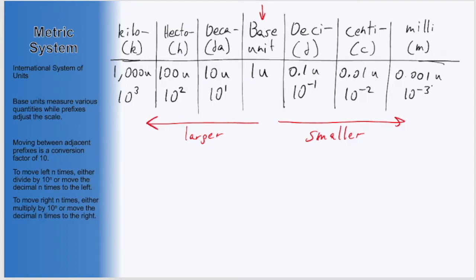Because of this simple factor of 10 difference between adjacent prefixes, conversions between metric units with different prefixes is always either a multiplication or division by some power of 10. When moving between prefixes, you want to look at or visualize this table and just count how many spaces you will be moving.